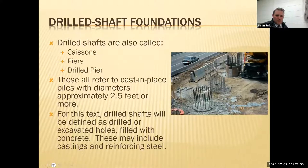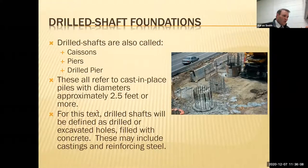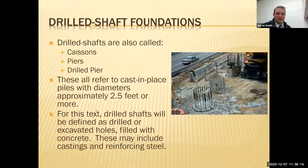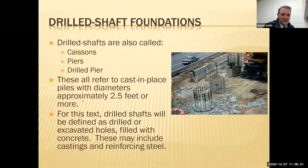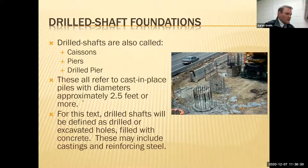There are a couple of names for drilled shafts. If you hear caissons, piers, drilled pier, or drilled shaft, it's all the same thing. They all refer to cast-in-place piles with diameters of approximately two and a half feet or more. A drilled shaft is defined as a drilled or excavated hole filled with concrete — pretty simple. You may also include reinforcing steel. They can be 50, 100, or 150 feet long.